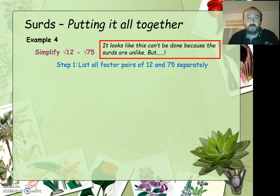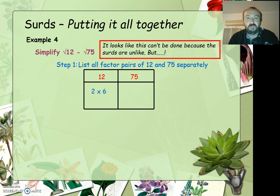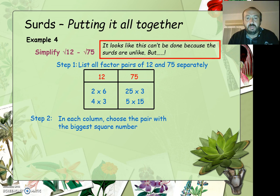First of all, list all the factor pairs of 12 and 75 separately — there are the ones of 12 and there are the ones of 75. Now, what you want to do is have a look at each one and choose the pair with the biggest square number. It's going to be 4 for the 12 and 25 for the 75. Both of those are squares: 4 is 2 squared, and 25 is 5 squared.